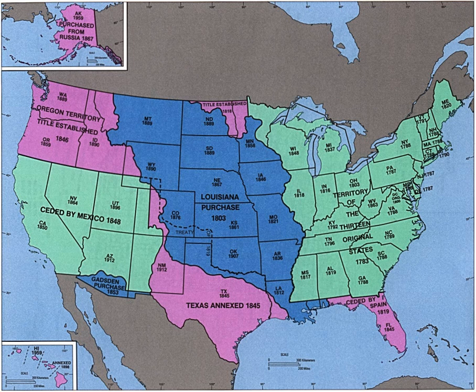Ryukyu Islands: The United States military government of the Ryukyu Islands was the government in Okinawa, Japan from 1945 to 1950, whereupon it was replaced by the United States Civil Administration of the Ryukyu Islands from 1950 until 1972.